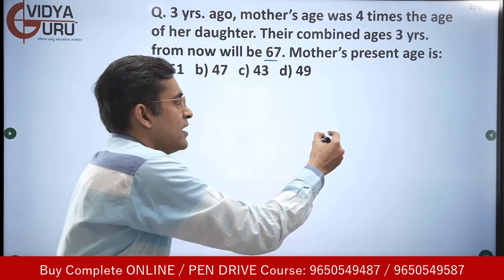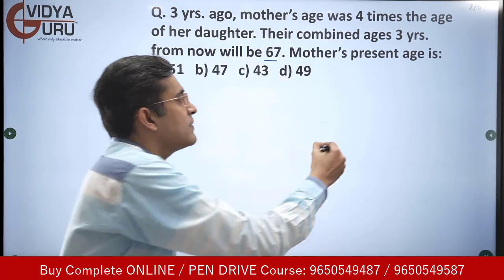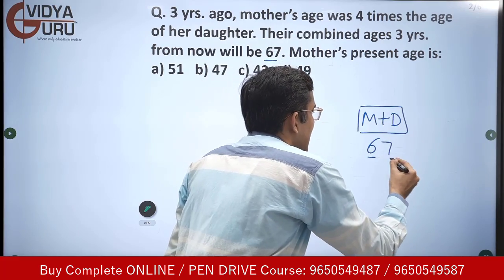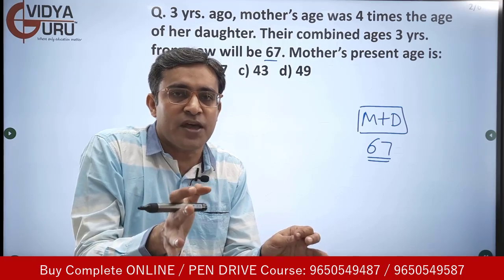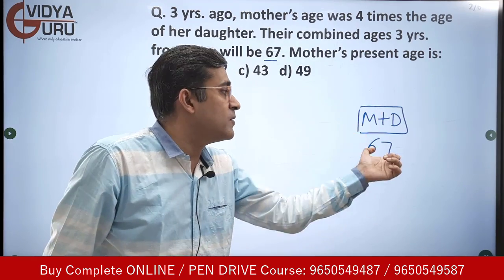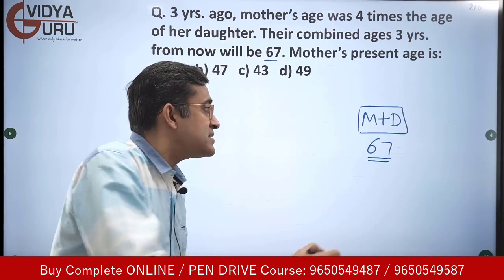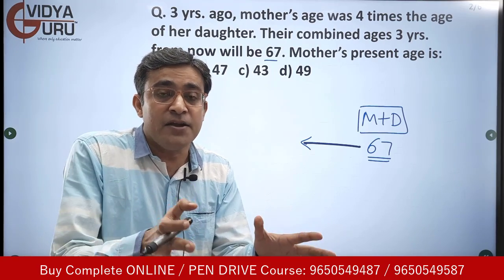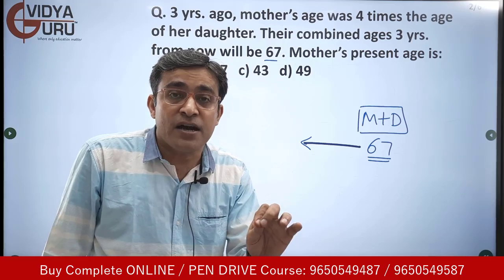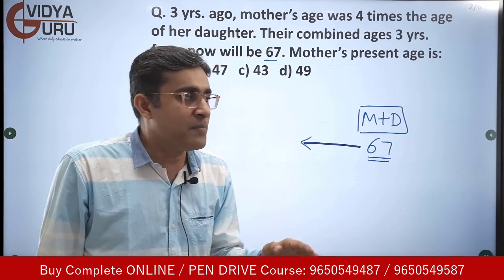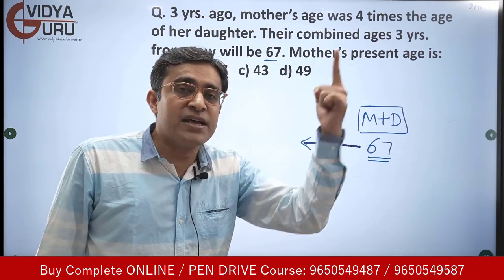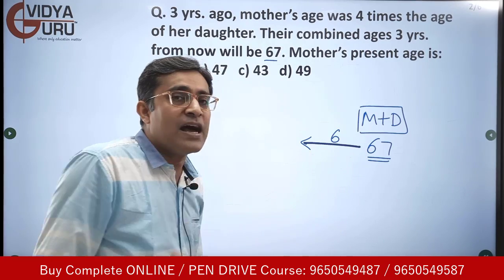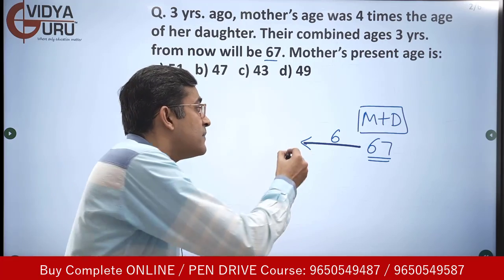Three years from now, the combined age of the mother and daughter will be 67. That means if I talk about today's age, mother will be three years younger and the daughter will also be three years younger. So we will have to subtract a total of six to arrive at the combined ages today.